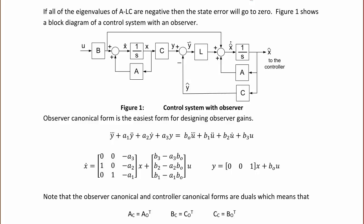Figure 1 shows a block diagram of a control system with an observer. Notice we still have the traditional input u, the state variable feedback, and the output y, but now we have a new part of the system which has y-tilde and y-hat. We also have x-hat-dot, where y-tilde is the difference between y and y-hat, and x-hat goes to the controller. This represents our observer.